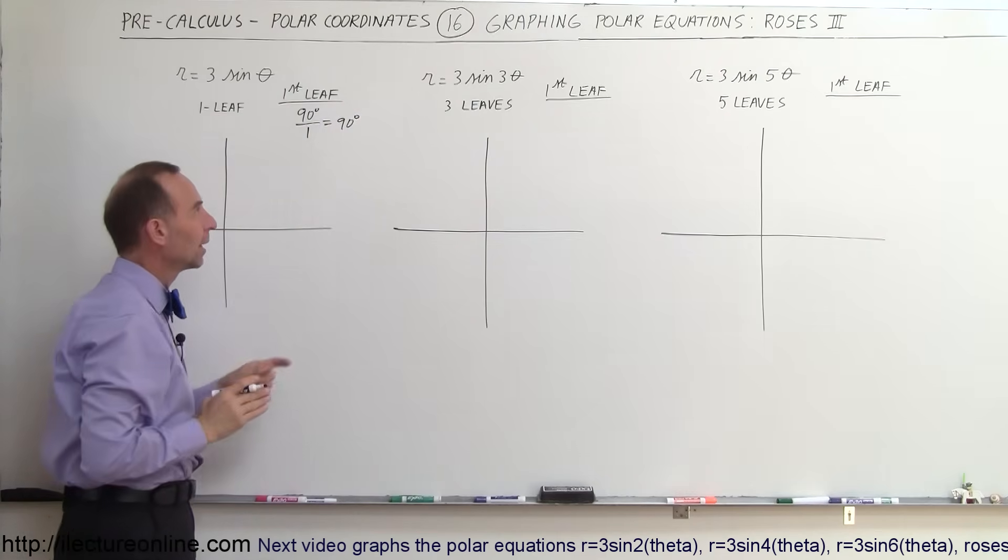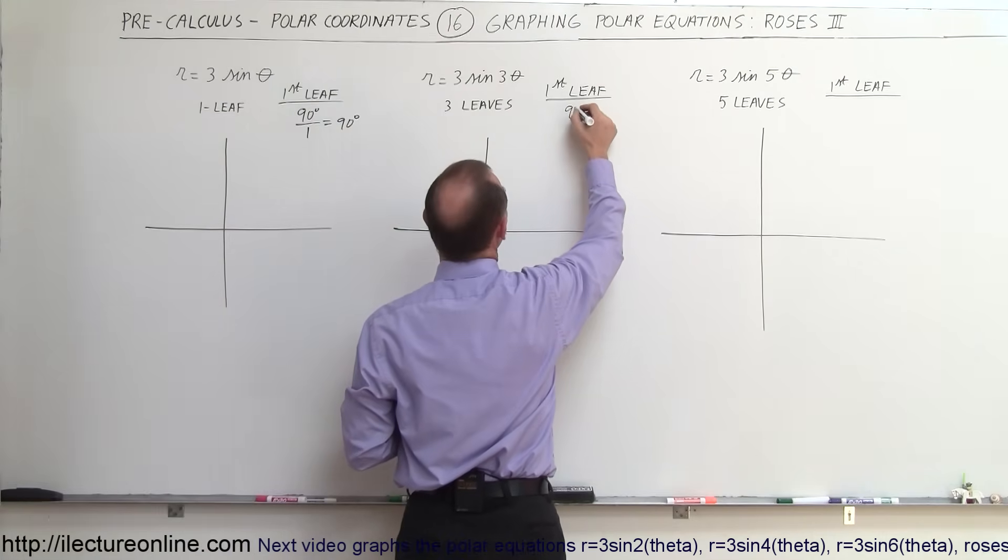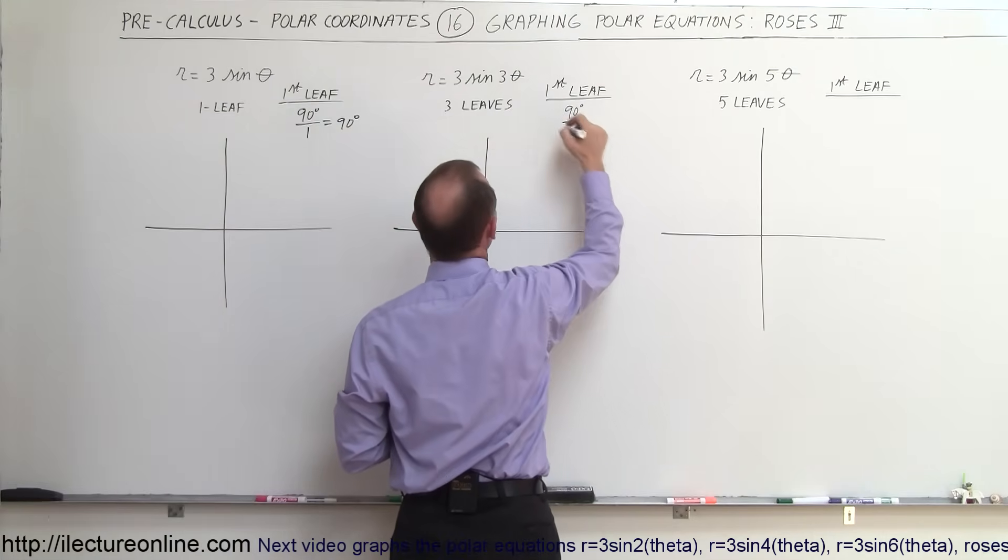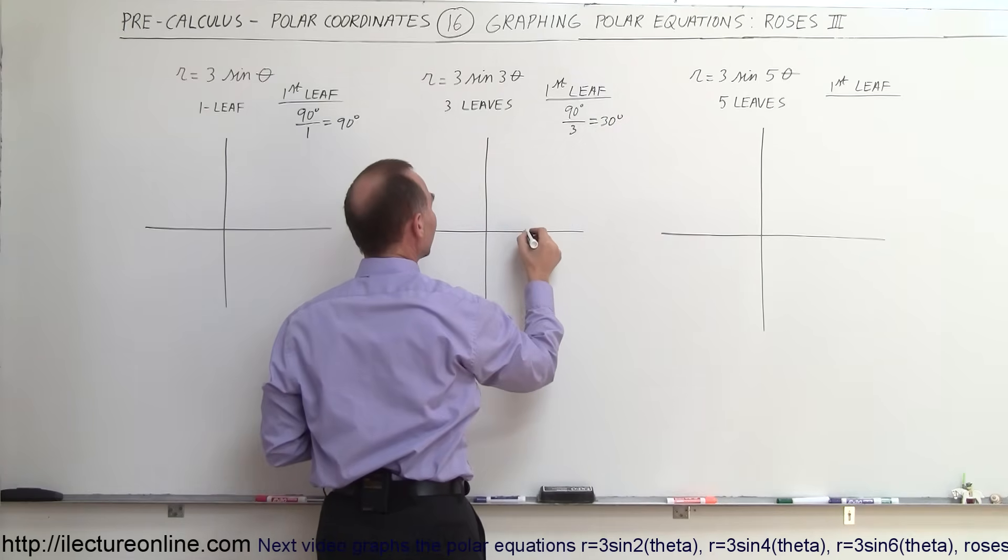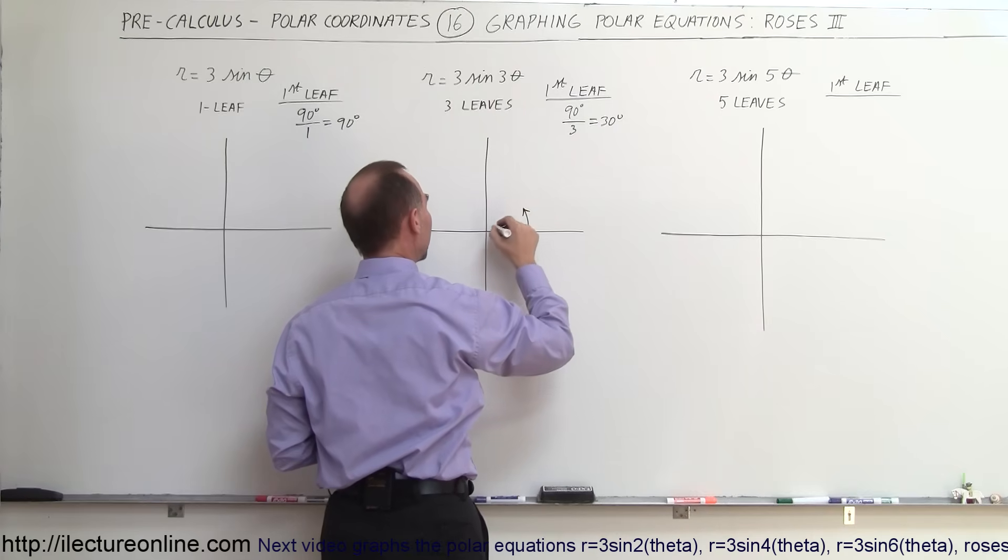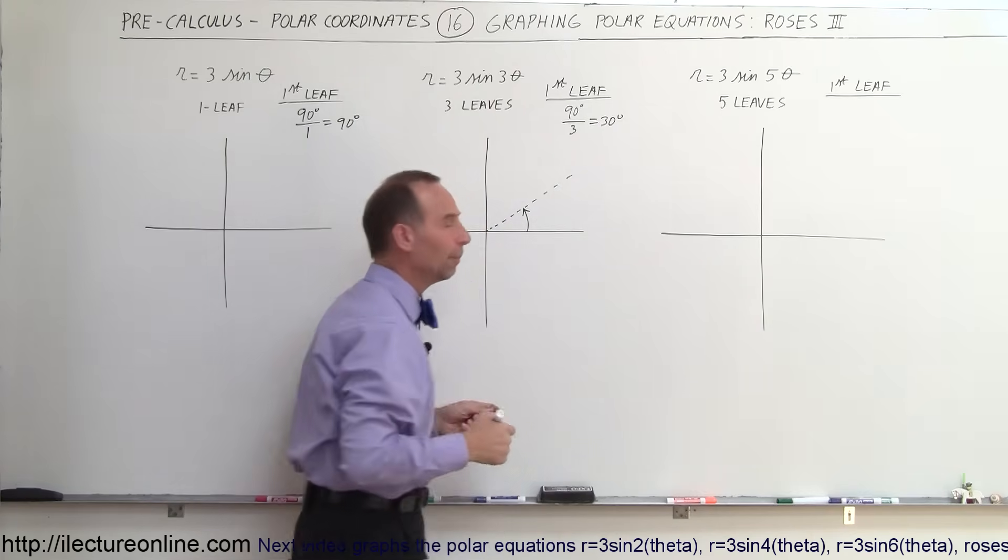In that particular case, the first leaf starts at 90 degrees divided by the number in front of the angle, which is 3, which is at an angle of 30 degrees. So if we go up 30 degrees like that, this is the axis about which the first leaf will form.